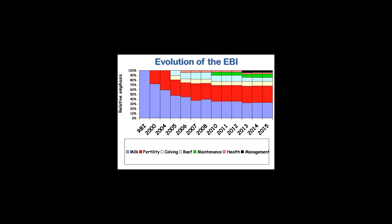Breeding indexes have evolved to reduce the weighting on milk production traits and increase the weighting on other traits affecting performance. In Ireland, prior to 2000, the Relative Breed Index (RBI) was based solely on milk production. The Economic Breeding Index was introduced in 2000 and has evolved since to include other traits such as fertility, calving, beef merit, maintenance, health, and management. As you can see, by 2015 the weighting on milk is about 30% and is equal to the weighting on fertility.